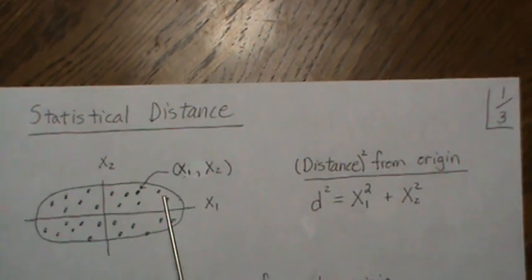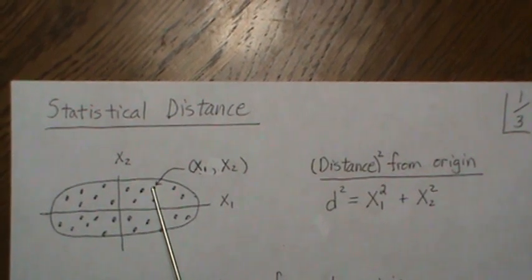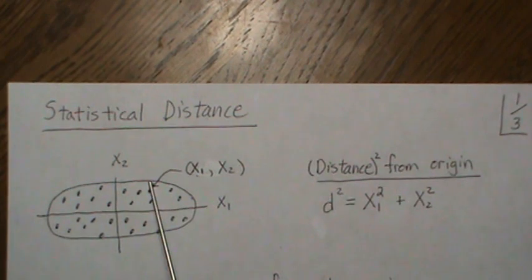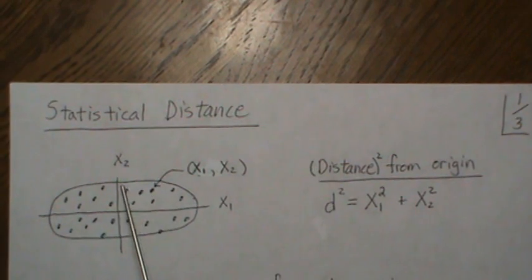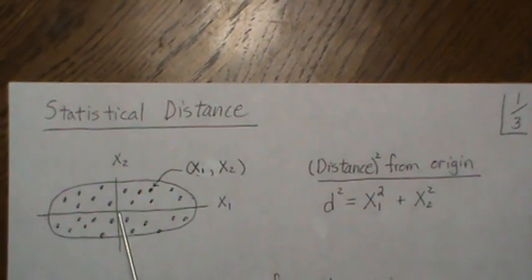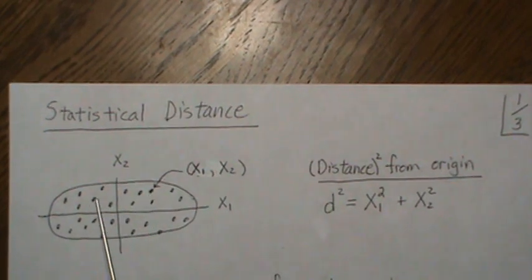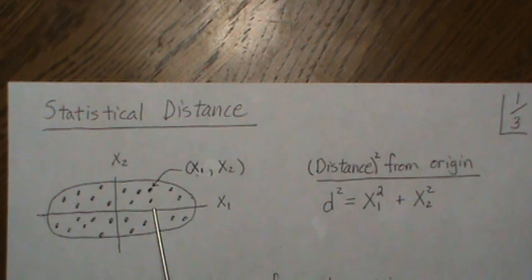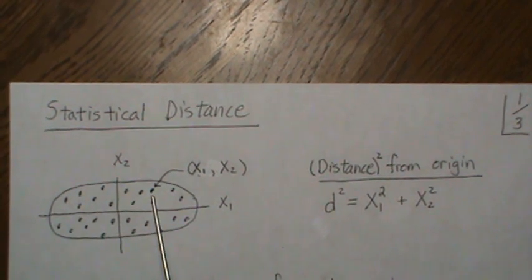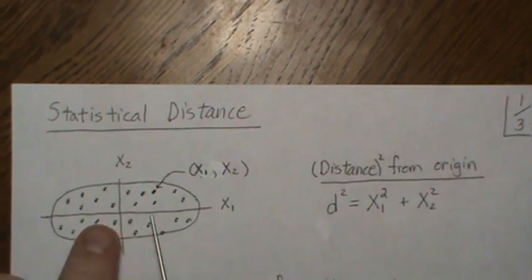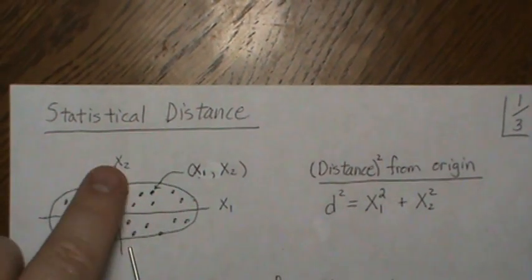But if we again look at this point, in regards to X2, it's sort of at the extreme top. So it's not a very likely point in the X2 range. But if we look at X1, it's sort of in the middle-ish, and so it's more likely. And so statistical distance actually accounts somehow for this variability in both directions.